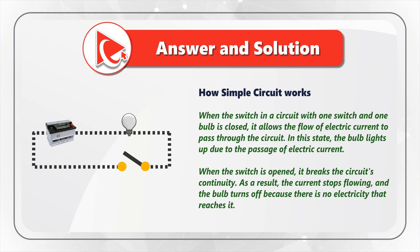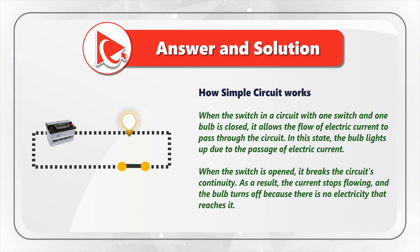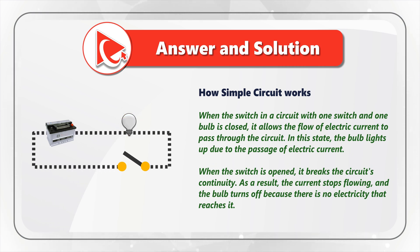A simple circuit contains only one light bulb, one switch, one battery, and conductors connecting these devices. When the switch in a circuit with one switch and one bulb is closed, it allows the flow of electric current to pass through the circuit. In this state, the bulb lights up due to the passage of electrical current. When we open the switch, it breaks the circuit's continuity. As a result, the current stops flowing and the bulb turns off because there is no electricity that reaches it.